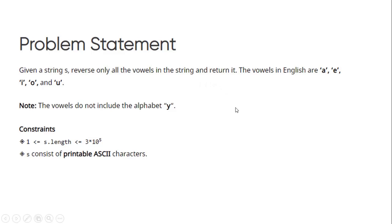I hope you know what the vowels in English are — they are A, E, I, O, and U. Please note that we will not be including the alphabet Y in this case. To understand this question better, let us go ahead and have a look at a few examples.